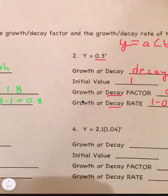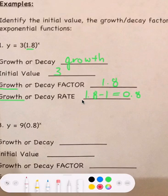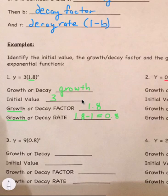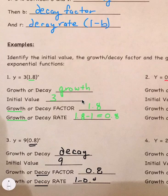For number 3, y equals 9 times 0.8 to the x. Since 0.8 is between 0 and 1, it is decay. The initial value is 9, the decay factor is 0.8, and the decay rate is 1 minus 0.8, which equals 0.2.